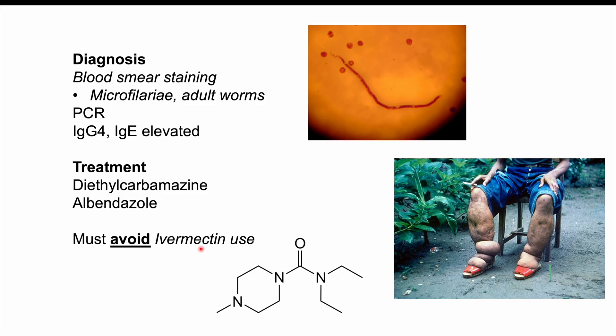In patients with loa loa given ivermectin, we can see severe encephalopathy, confusion, and even death. Loa loa was historically considered benign and only addressed in the context of river blindness treatment, but now we know it has its own complications. We must always screen for loa loa in patients with river blindness, since ivermectin — the treatment for river blindness — can be life-threatening if the patient is co-infected with loa loa. Please check out the full lesson on river blindness for more information.